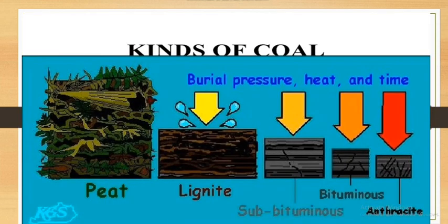Coal is basically converted from the wood after a long time period. Chemical actions and bacterial actions ki wajah se peat mein convert hoa. Look at the figure closely. After that, kuch aur time pass hoa, uske oper pressure aur temperature bada, to yeh convert ho gaya lignite ke anndar. Then more pressure, more heat and more time passes - it is converted into bituminous coal. Again more time, more pressure, more heat - then aap ki paas finest form aajati hai coal ki, that is called anthracite.